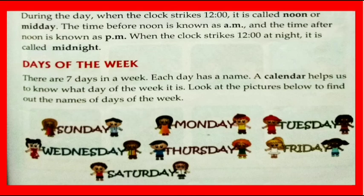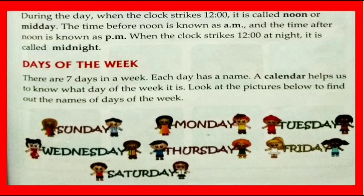When the clock strikes 12 at night, it is called midnight. Days of the week: there are seven days in a week and each day has a name. A calendar helps us to know what day of the week it is. The days of the week are Sunday, Monday, Tuesday, Wednesday, Thursday, Friday, and Saturday.